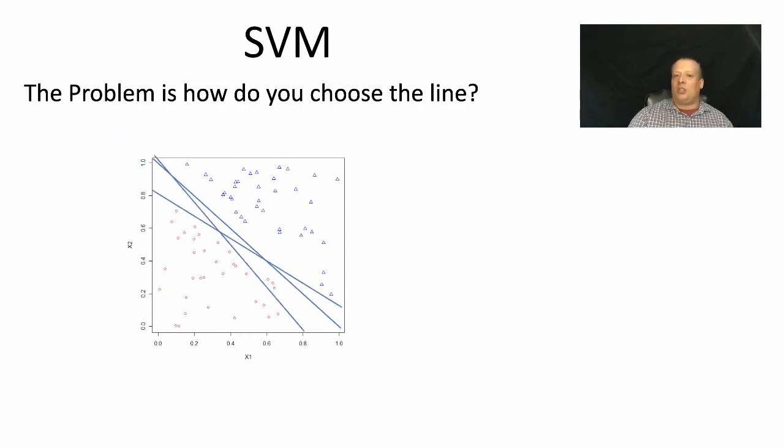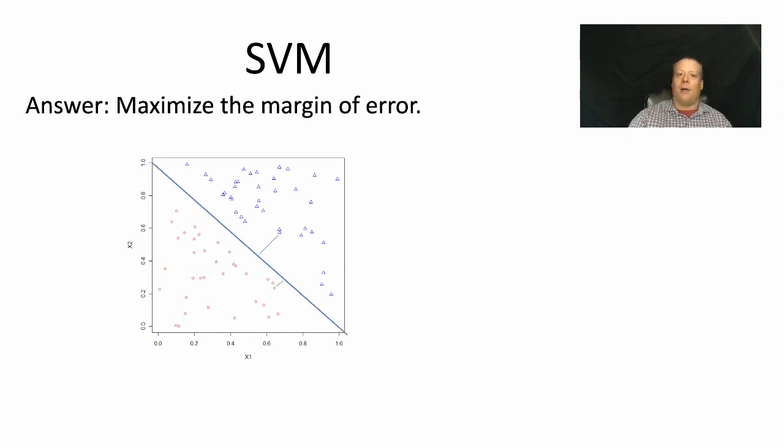Now the problem becomes, how do you choose that line? There are many different ways to choose that line. In this particular case, I have at least a couple that actually still totally separate, one that kind of gives up a little bit of that separation. The answer that support vector machines relies upon is that you should maximize the margin of error. In other words, draw that line such that it's as far away as possible from any of the known examples that you have. And that way you maximize the margin of error for classifying this particular tool.